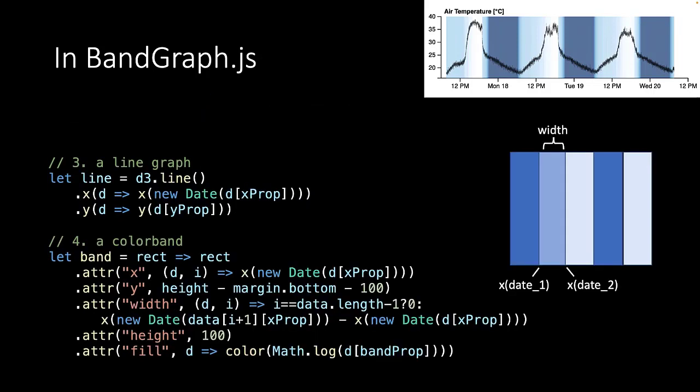Instead of an area, we now define a line using the D3.line method. Here we only have to supply the X and Y values of the line, of course.